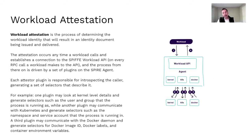As a second stage, we have workload attestation — the process of determining the workload identity that will result in an identity document being issued and delivered. That occurs whenever a workload calls and establishes a connection to the SPIFFE workload API, driven by a set of plugins on the SPIRE agent. Each attester plugin is responsible for introspecting the caller and generating a set of selectors. One plugin will introspect kernel details such as user and group the process is running as. A separate plugin communicates with Kubernetes to generate selectors like namespace and service account. A third plugin may communicate with Docker to get Docker labels, image ID, and container environment variables.